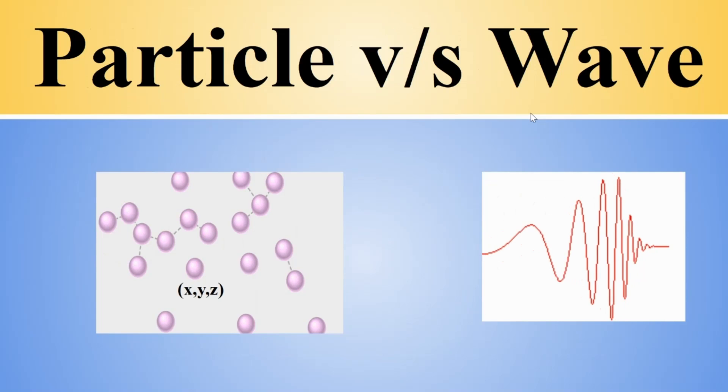Particles have a particular location. For sure, particles can be extended objects, can have a size, but they have a sharp boundary. So it is straightforward to define what is the center of mass of the object and what is the volume that this particle occupies.